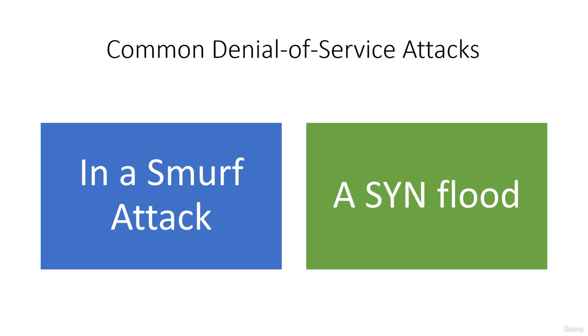As the junk requests are pushed constantly to the server, the server will become overwhelmed, which causes a DoS condition for legitimate requests. The first example is a SMURF attack.